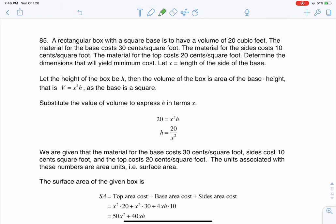And then they gave us these numbers that the material for the base costs 30 cents per square foot, the material for the sides cost 10 cents per square foot, and the top cost 20 cents per square foot, and we want to get the minimum cost.